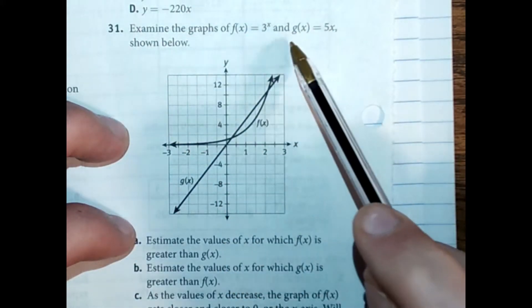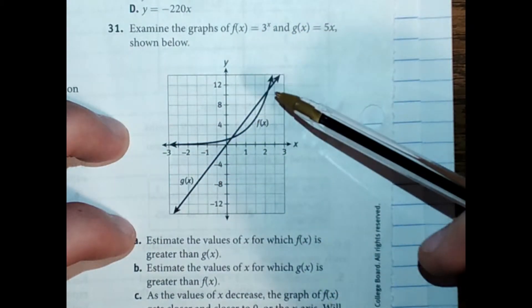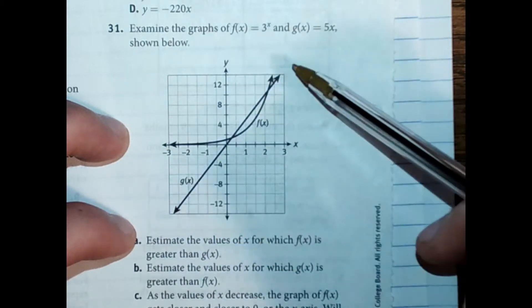As for 31, we've got two functions, 3 to the x power, that's the exponential, and 5 to the x, or 5x, that's the linear.